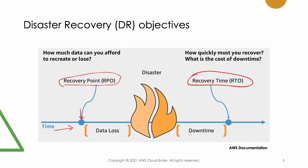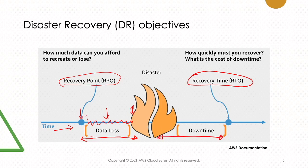RPO is the recovery point objective — the point up to which you should be able to recover data before the failure occurred. RTO is the recovery time objective — how much time you allow your business to be down since the disaster happened. Data loss occurs between the last backup point and the disaster event, while downtime represents the period when the system is unavailable. We'll discuss RPO and RTO in more detail in the next slides.